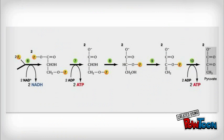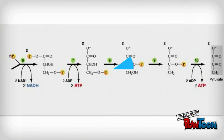The two PGALs are converted to two pyruvates, which creates four ATPs and two NADHs. The net ATP production of glycolysis is two ATPs.